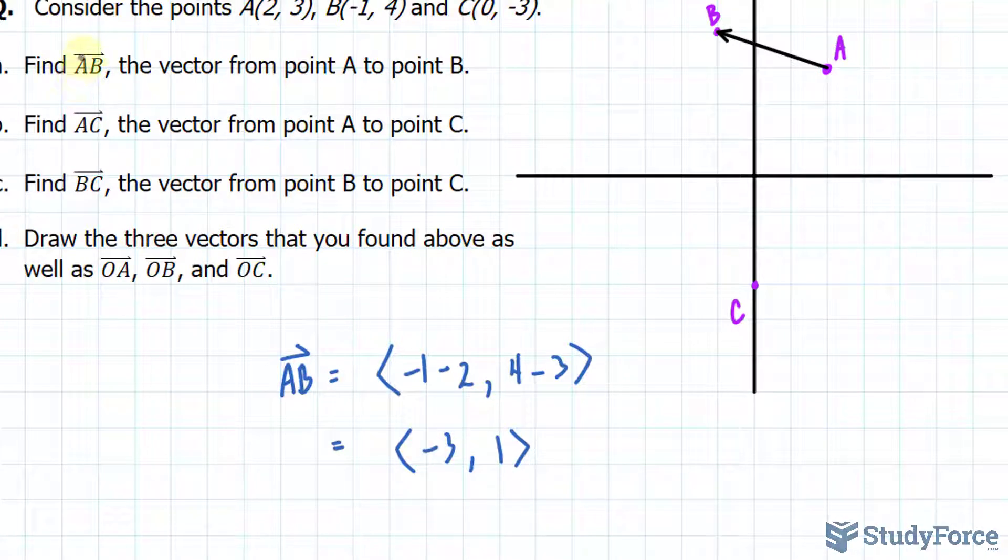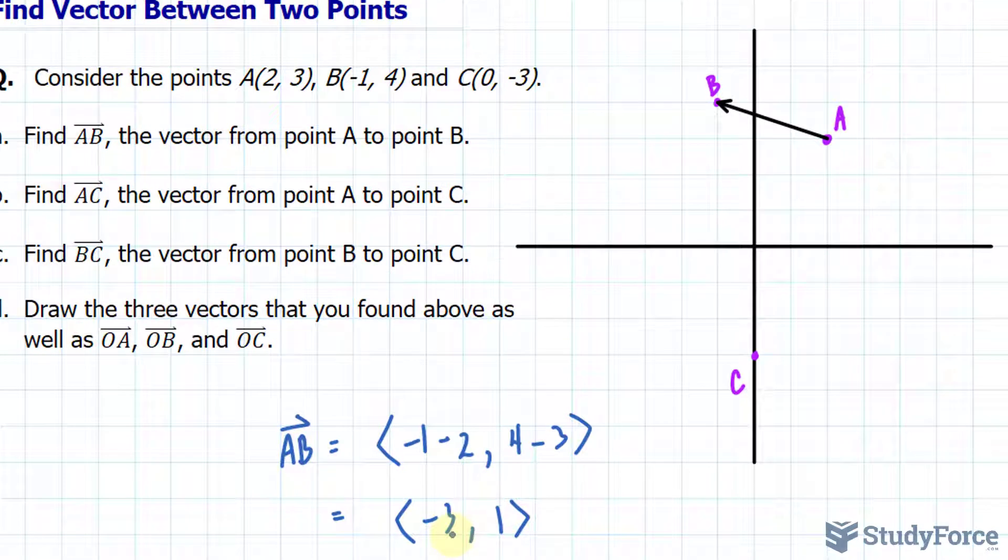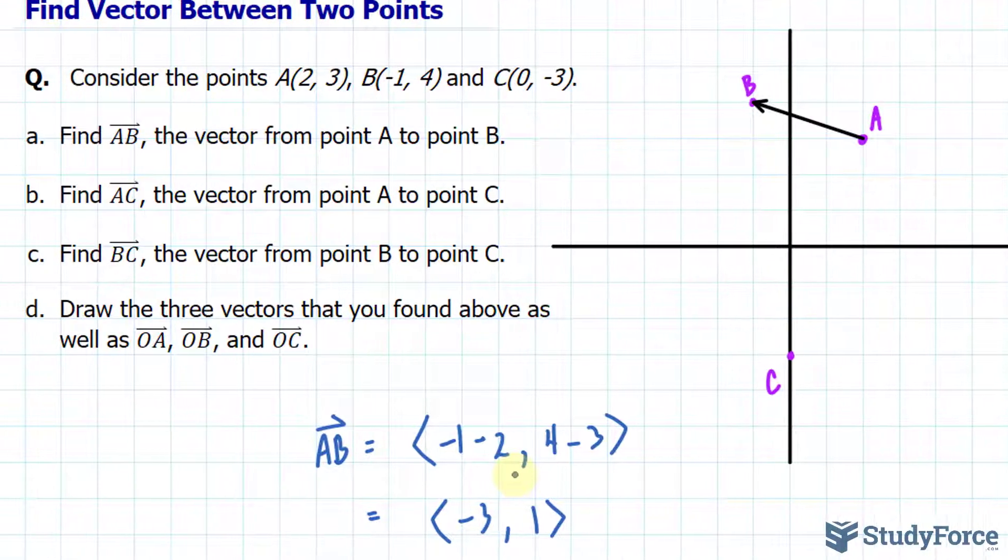Now, had you ignored the fact that we start at A and end at B, your components would be the opposite, where it would be <3, -1>, and that would not be correct. Let's try the next one.